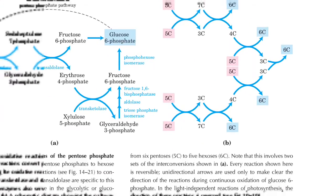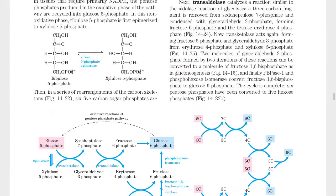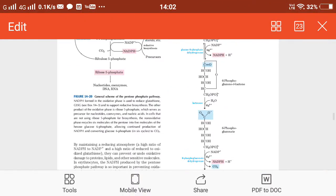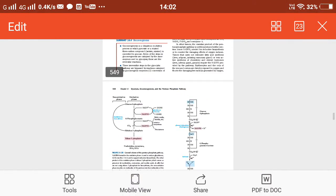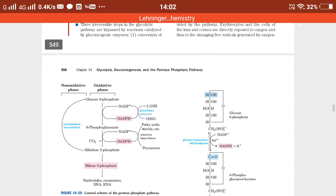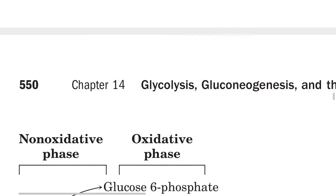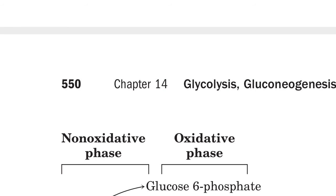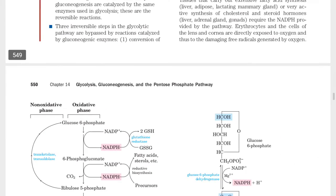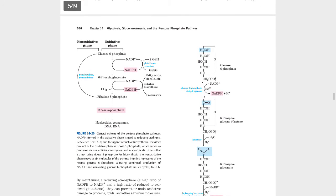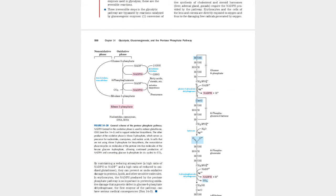From an exam point of view, you do not need to memorize all details of the non-oxidative phase. Focus on the chart given in Lehninger page 550. Remember the significance of the pathway: to regenerate glucose-6-phosphate through rearrangement reactions using transketolase and transaldolase enzymes.